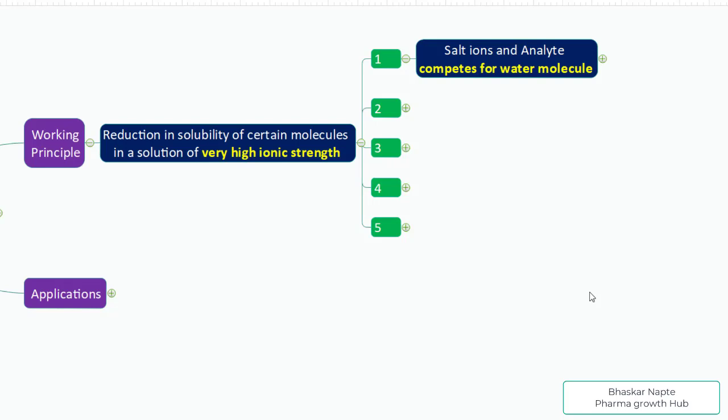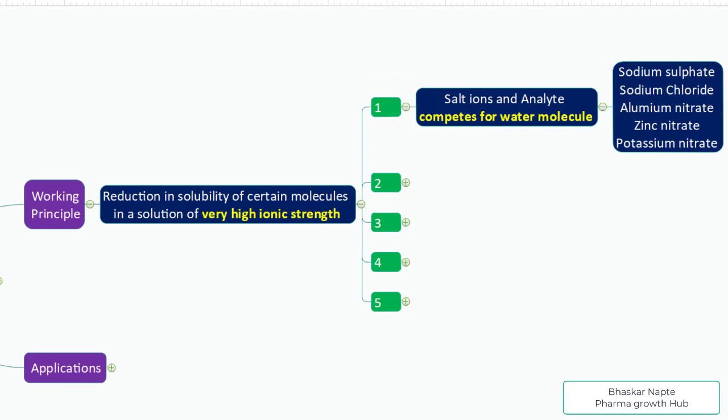Now the salt ions also have affinity toward water molecules, so they both start competing with each other to get the water molecule. The substance that does not get the water molecule is going to come out of the solution — this is the salting out effect. Salts you can use include sodium sulfate, sodium chloride, aluminum nitrate, zinc nitrate, or potassium nitrate — all highly water soluble.